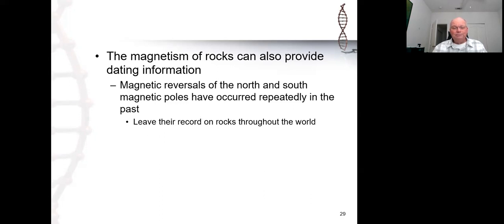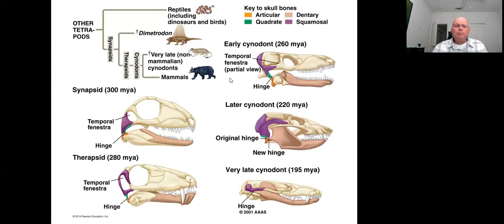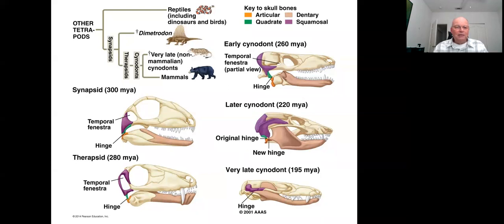I should talk about this diagram because we've touched on it and it will become significant later in the semester. I mentioned there are two major branches that come from those hairy reptiles — the gorgonopsids and other animals that dominated the Permian. A few of them made it through the Permian extinction and became the ancestors to reptiles in the form of the diapsids.